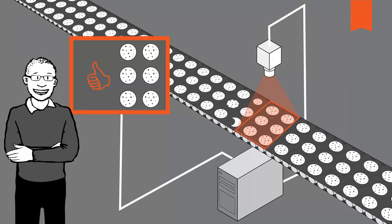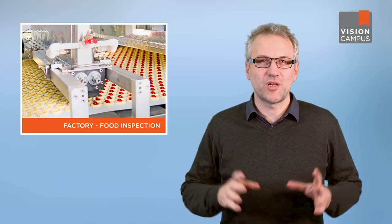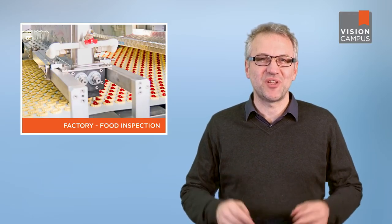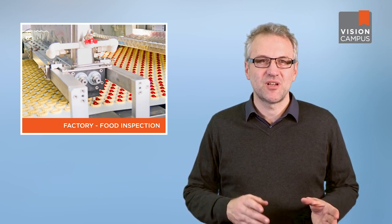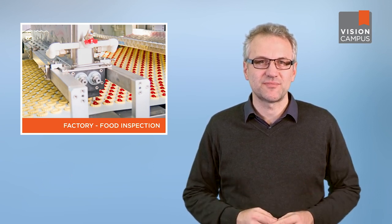Remember our cookie inspection example from the vision systems video? This is one of the many examples where a CMOS sensor is a good fit. In food inspection, system costs need to be as low as possible. In addition, the better price-performance ratio of CMOS cameras makes these systems more affordable than comparable systems with CCD sensors.